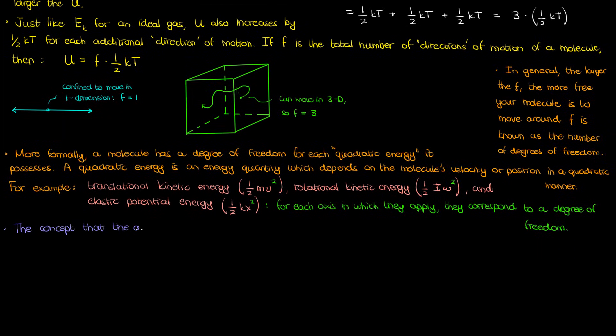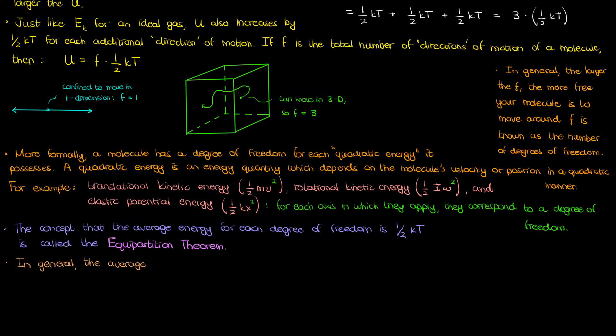Now the concept that the average energy of any degree of freedom is half kT is an important result in statistical mechanics. It's called the equipartition theorem. We'll prove this later on in our series, but in general using the equipartition theorem, the average total thermal energy for a system with capital N molecules and F degrees of freedom per molecule is N times F times half kT.